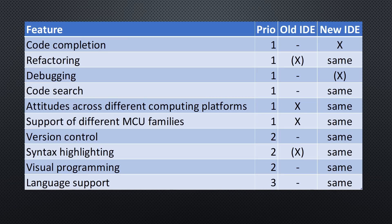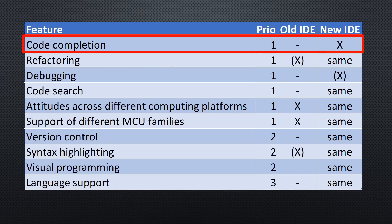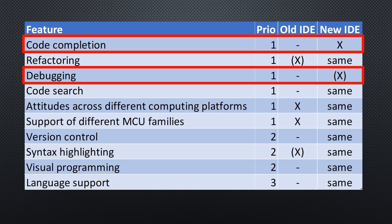So let's check what we expected and what we got. Comparing all features, there are only two main differences between the old and the new IDE: code completion and debugging. Both were on our wish list, but unfortunately we still have to wait till they are ready. For the ESP32 debugger, probably even longer.